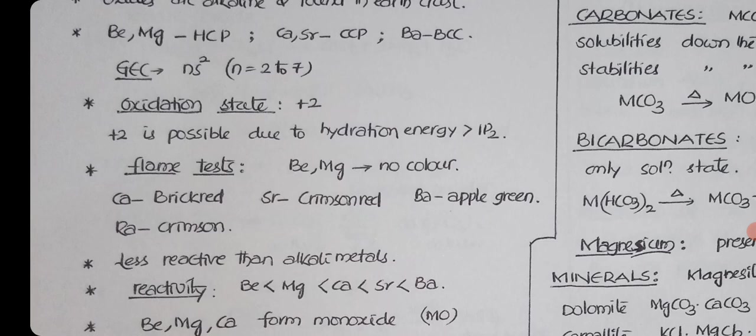Flame test colors: beryllium and magnesium, there is no flame test. The energy required for excitation of electrons is very high in case of beryllium, magnesium, so they do not show any flame test color. Remaining three: calcium brick red, strontium crimson red, barium apple green. For radium also crimson is mentioned.